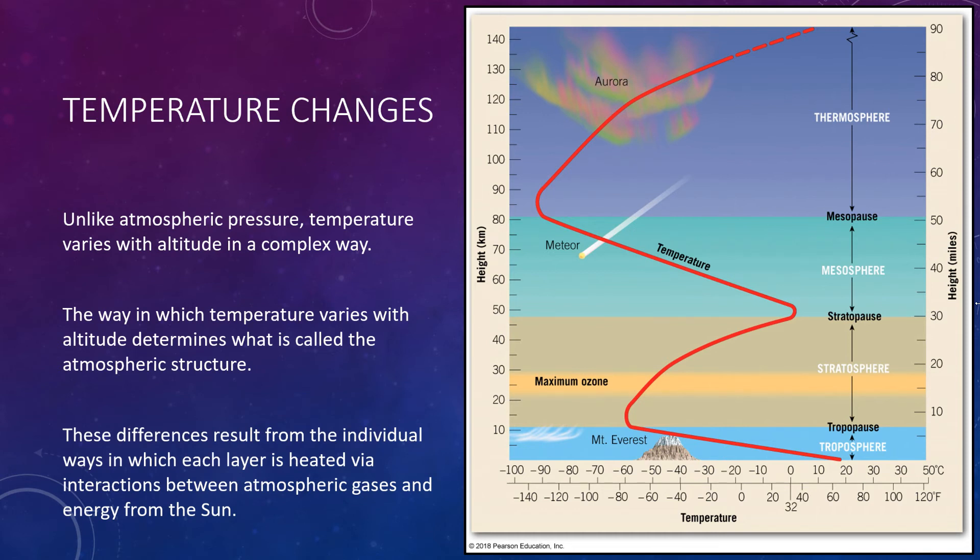As you can see on this large image on the right, we have the structured layers of our atmosphere. We have four main layers that we're going to look at, and you'll notice the temperature zigzags back and forth as we go up. So what we're going to do is take one slide to look at each of these layers, starting from the bottom where we live.